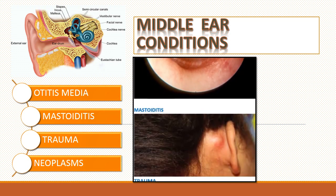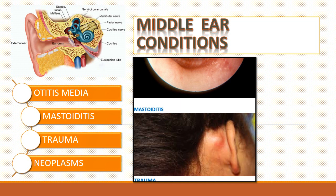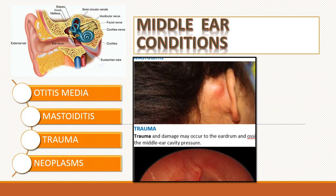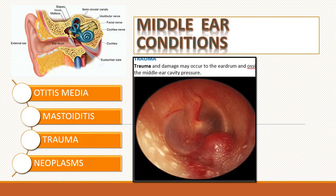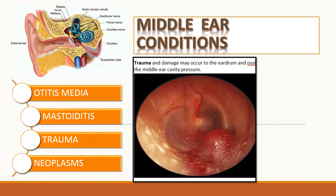Mastoiditis is an infection of the mastoid ear cells caused by untreated or inadequately treated otitis media. Trauma to the ears may cause damage to the eardrum caused by infection, direct damage, or a rapid change in middle ear cavity pressure. Tumors of the middle ear are very rare; the most common is the glomus jugulare, a highly vascular benign lesion arising from the jugular vein. Cancerous ear tumors include adenocarcinoma and adenoid cystic carcinoma, which may disrupt conductive hearing, erode the ossicles, and spread to the inner ear or nearby cranial nerves.